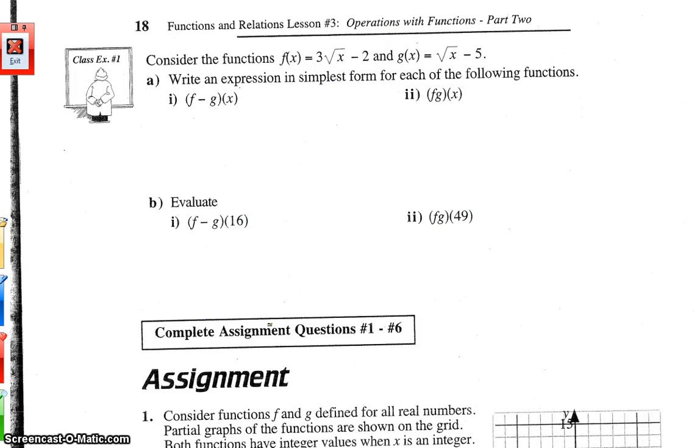Example number one. Consider the functions f(x) equals 3 root x minus 2, and g(x) equals root x minus 5. We're going to skip, actually, this one, because we covered that in the last lesson. And we are going to look at f times g of x. So they want, notice it's of x. So we have to get the expression. So if you recall, that is the same as f(x) times g(x). So we are going to substitute in for f(x), what f(x) equals, 3 root x minus 2. Substitute in for g(x), what that is equal to, root x minus 5.